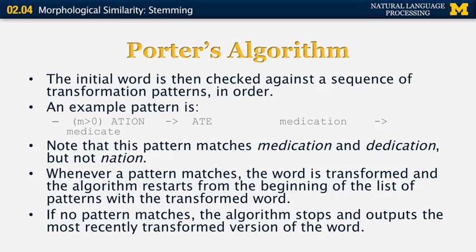However, this rule is not going to convert 'nation' to 'nate', because the measure of 'nation' is not greater than zero. The measure is computed only for the portion of the word not listed in the pattern — 'nation' is really N followed by '-ation', so we want the part N to have a measure greater than zero, and that is not the case: N has a measure of zero.